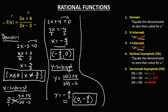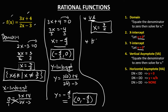For the vertical asymptote, from the domain we have x equals positive 3 over 2. For the horizontal asymptote, the degree of the numerator equals 1 and the degree of the denominator equals 1. Since the degree of the numerator is equal to the degree of the denominator, the horizontal asymptote is the ratio of the leading coefficients: y equals positive 3 over 2.